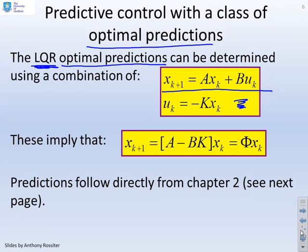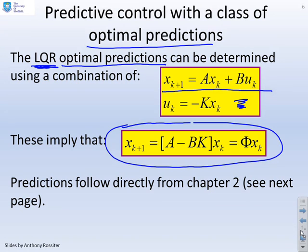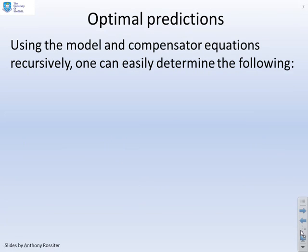If you combine these two together, you find your optimal predictions are given by x_{k+1} equals (A minus BK) times x_k. The key thing is it's known. So taking that model, I can form the predictions.